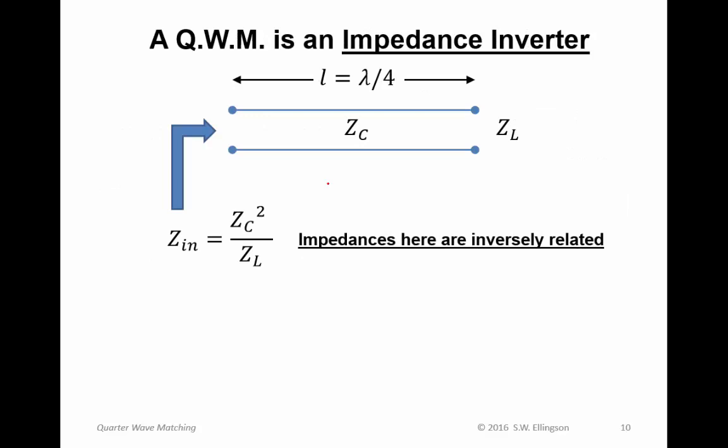Now, a related topic, and that's impedance inversion. A quarter wave match is an example of an impedance inverter. Now, what do I mean by that? Here's a quarter wave section. It's lambda by 4, has characteristic impedance of Z sub C, and load impedance of Z sub L. Now, we've shown that the input impedance of this thing is Z sub C squared divided by Z sub L. Note that the impedances here are inversely related. That is, the relationship between Z in and Z L is a reciprocal relationship. The larger Z L is, the smaller Z in is, and so forth.